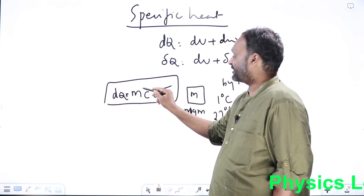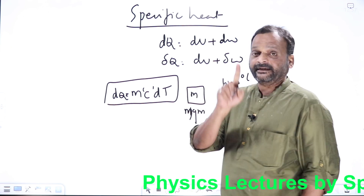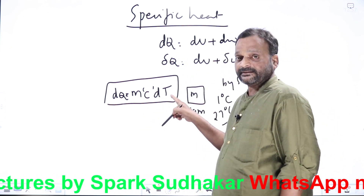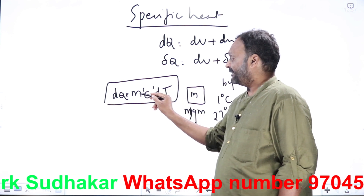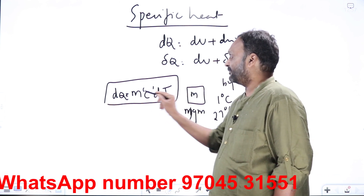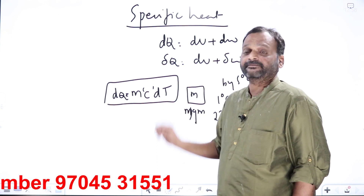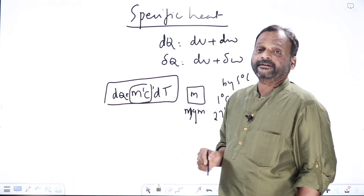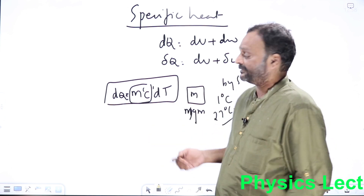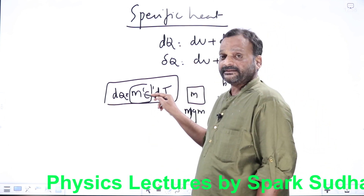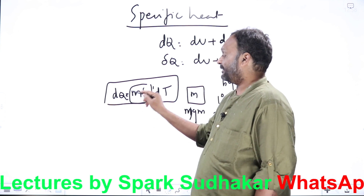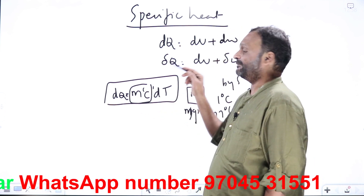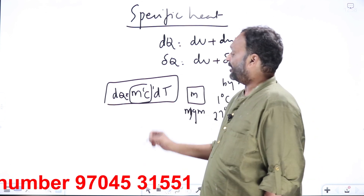C is called specific heat — the heat required to raise the temperature of one gram through one degree, that is when M equals 1 and DT equals 1, DQ equals C. M times C is called heat capacity — the amount of heat required to raise the temperature of M grams through one degree Celsius.